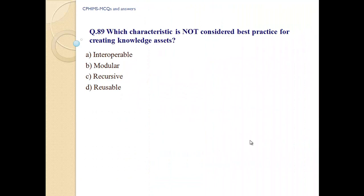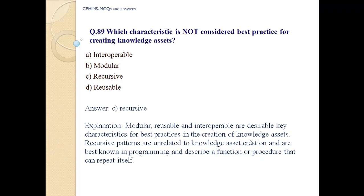Question number 89: Which characteristic is not considered best practice for creating knowledge assets? A. Interoperable, B. Modular, C. Recursive, D. Reusable. Answer C: Recursive. Explanation: Modular, reusable, and interoperable are the desired key characteristics for best practice in the creation of knowledge assets. Recursive patterns are unrelated to knowledge asset creation and are best known in programming, describing a function or procedure that can repeat itself.